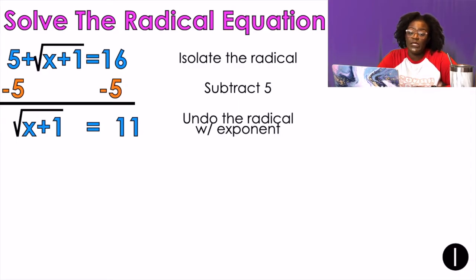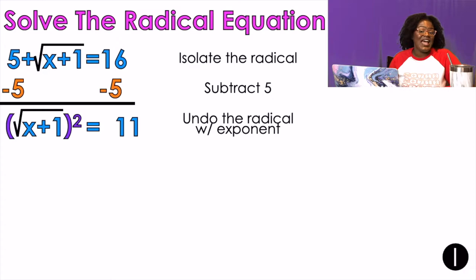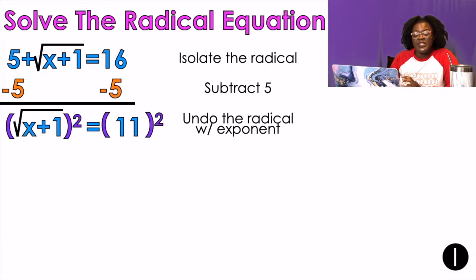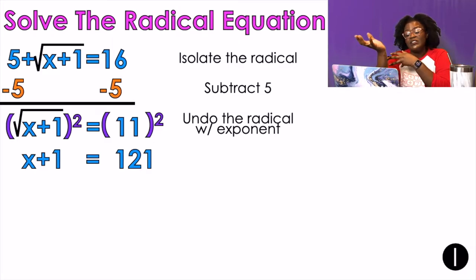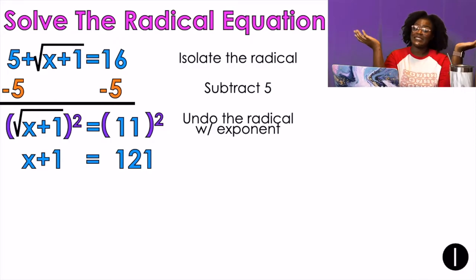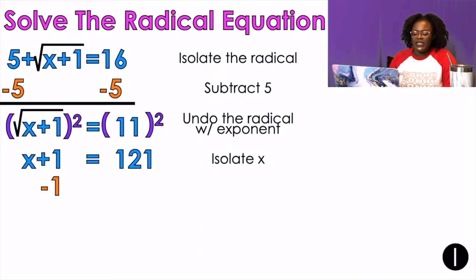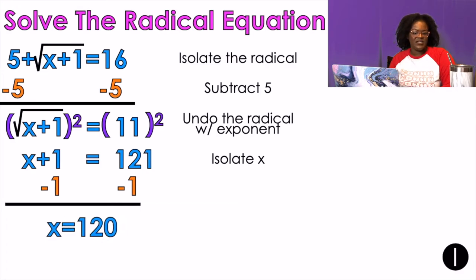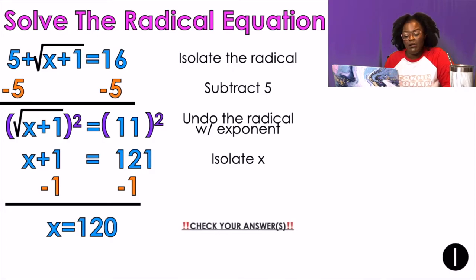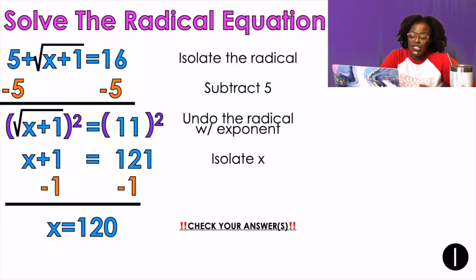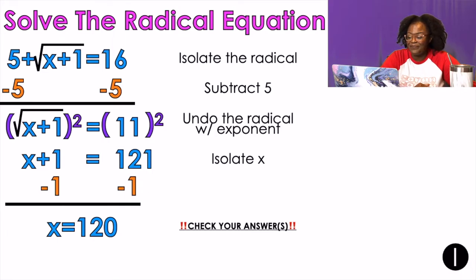So I'm going to undo the radical with an exponent. It's a square root, so I have to square it. If I do it on one side, I have to do it to the other. If I square something under a square root, I just cancel out the square root, leaving x plus one on one side. When I squared the 11 on the other side, 11 squared is 121. So now it's a regular equation — isolate x — and x equals 120. Just like with rational equations, you need to check your answers. There will be extraneous solutions, so make sure you plug back in the 120.